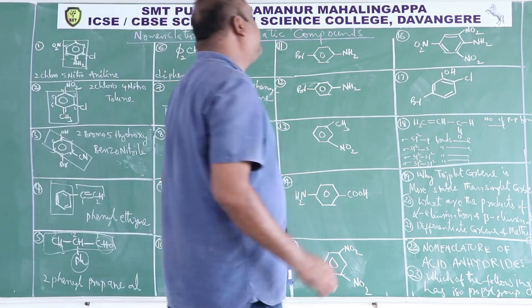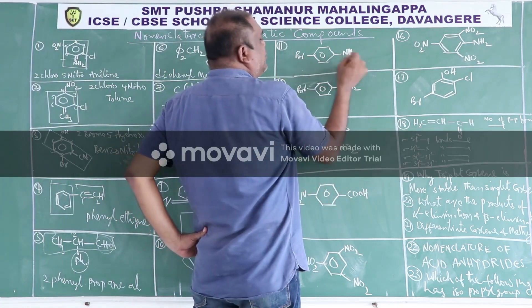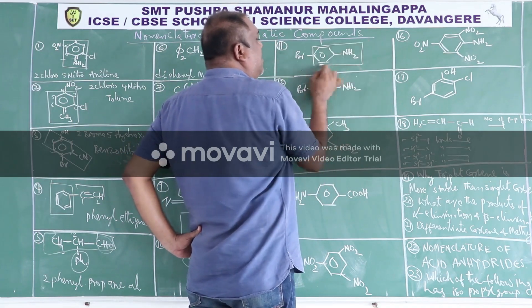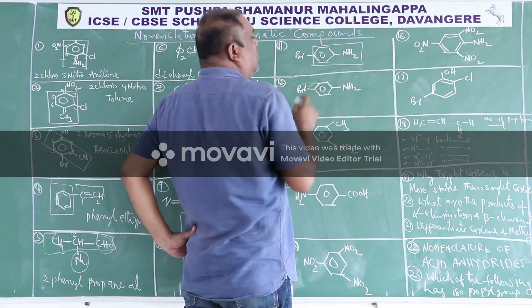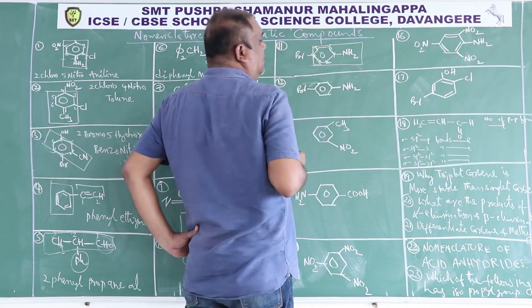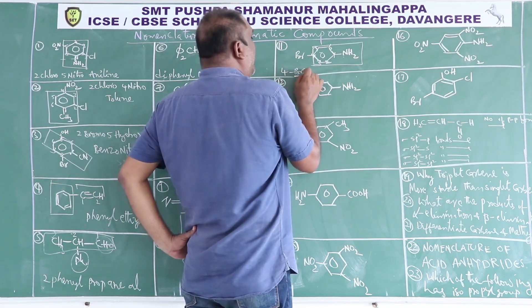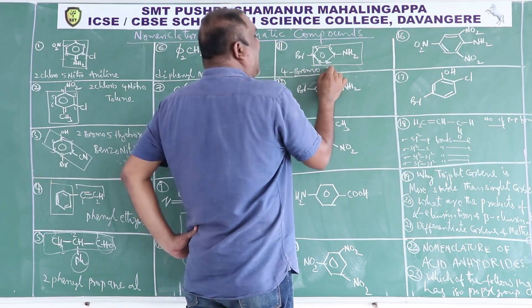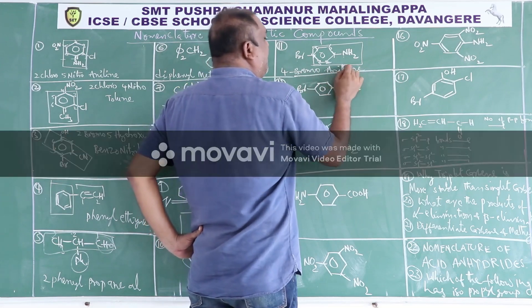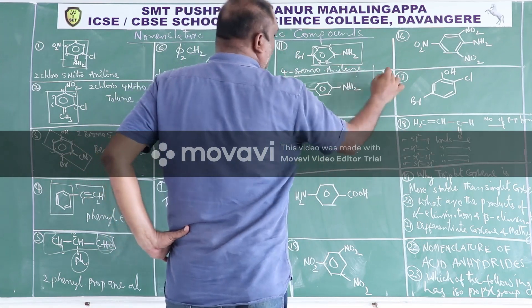Here there is a bromine substituent and an amino substituent, but the amino substituent becomes the base compound, so aniline is the base. Numbering 1, 2, 3, 4, 5, 6: the fourth carbon has bromine, therefore the IUPAC name is 4-bromoaniline.